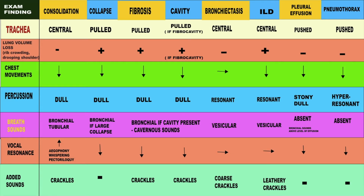Breath sounds would be bronchial and tubular in consolidation, bronchial if there is a large collapse, bronchial if a cavity is present with fibrosis, and cavernous breath sounds can be heard in a fibro-cavity. Vesicular breath sounds are heard in both bronchiectasis and interstitial lung disease. Breath sounds are absent in pleural effusion, but bronchial breath sounds can be heard above the level of an effusion. In pneumothorax, breath sounds are absent.